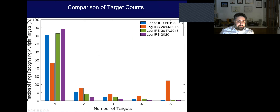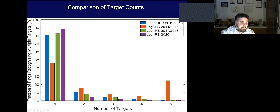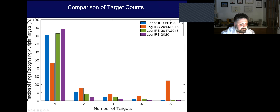Comparing target counts between our linear IPS5 and the new log IPS sixth generation: the linear performance is comparable to that of the log IPS. The log IPS in 2014-15 had pretty good performance on detecting five targets, and overall performance is very similar between the two systems.